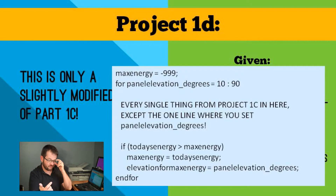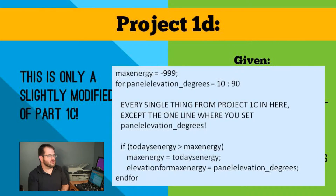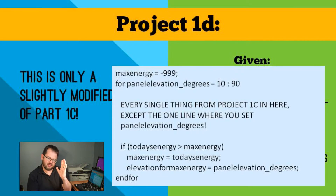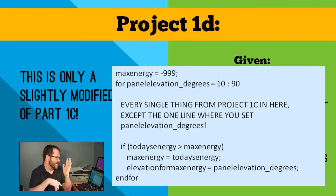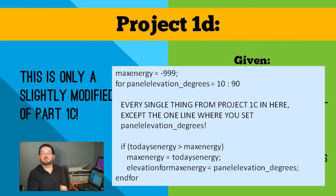The first time we go through with a panel elevation angle of 10 degrees, we're going to have produced more than negative 999 joules per square meter of energy. So today's energy will be more than max energy, so max energy is set to whatever we got at this initial panel angle. Our elevation with max energy will be set to 10 degrees, and then we'll do it for 11 and 12. Probably as we tip the panel farther and farther, we'll be getting more and more power until we hit whatever is the maximum. Then from there, as we tip the panel farther and farther back, we're going to be getting less and less energy over the course of the day.